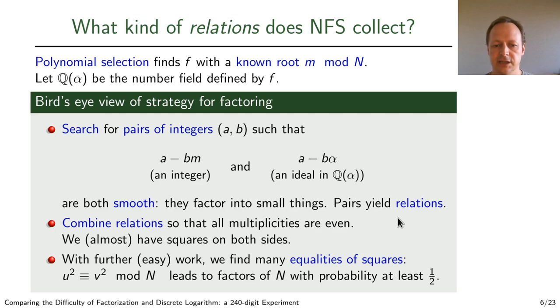What we want to do with these relations is combine them, combine a subset of them, so that all the multiplicities that appear in the factorizations are even. This is done by linear algebra. When we have such a combination with even multiplicities on both sides, we have an equality of squares. Each of these, when mapped modulo n, gives us a non-trivial factorization of n with probability at least one half. So this is how NFS factors integers.